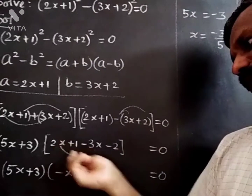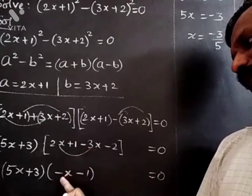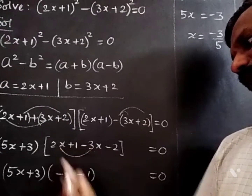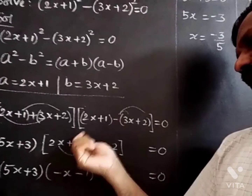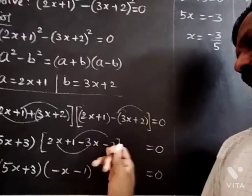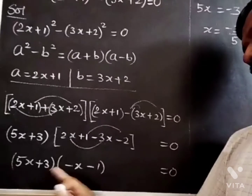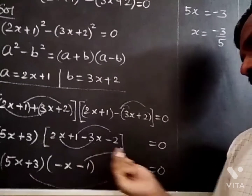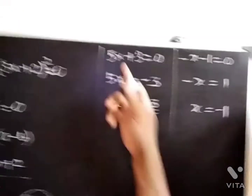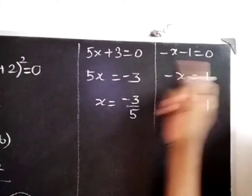Now combining like terms: 2x plus 3x is 5x, and 1 plus 2 is 3. Signs are different — put the bigger number's sign and subtract. After subtracting, A squared gives 5x plus 3, with a coefficient of 0 for one term, and minus x minus 1.